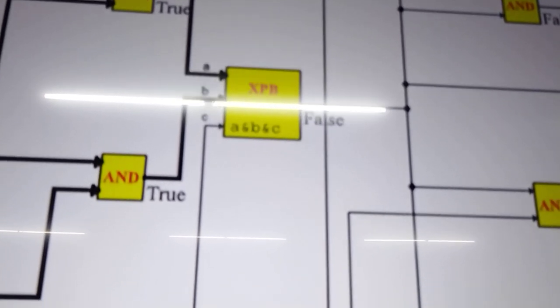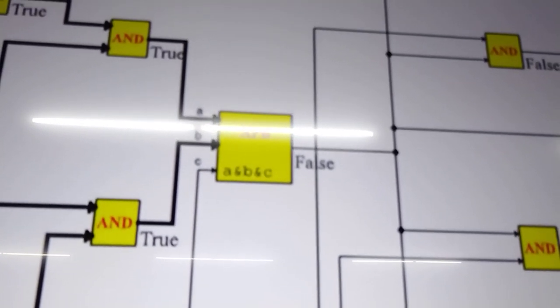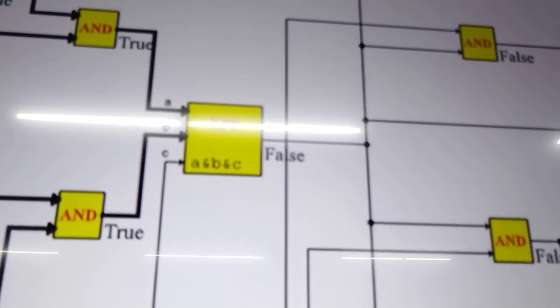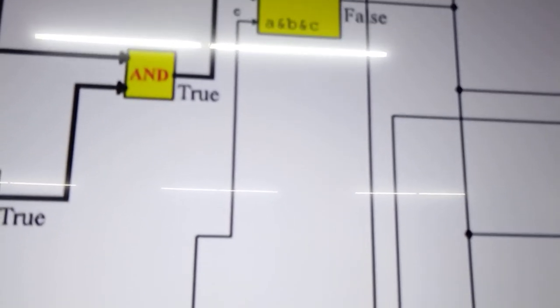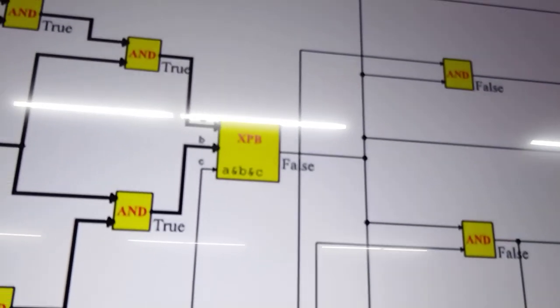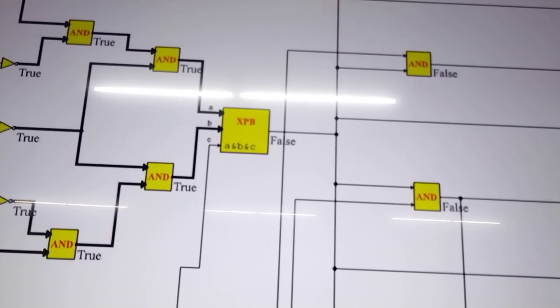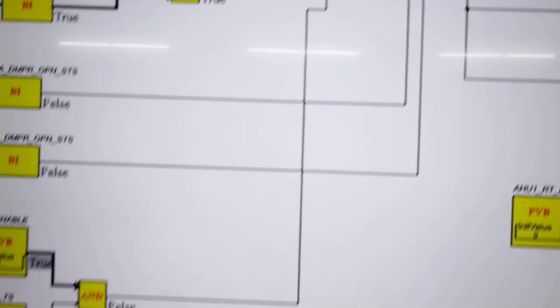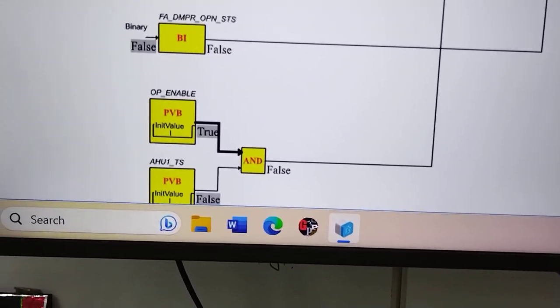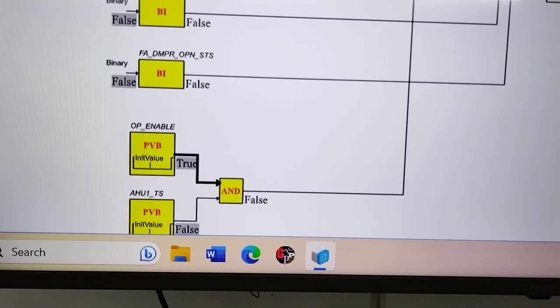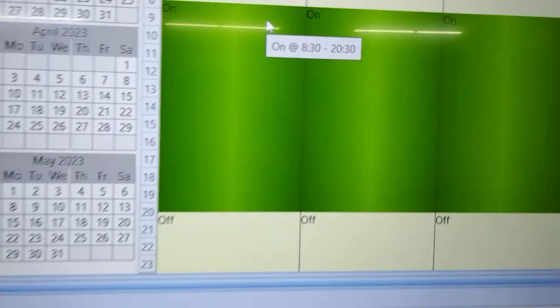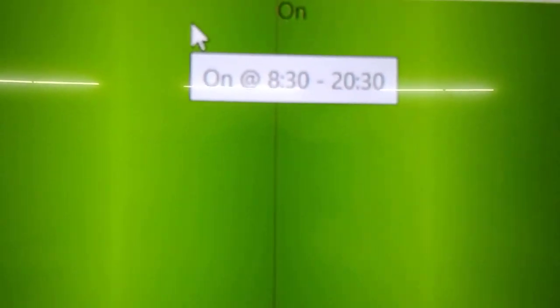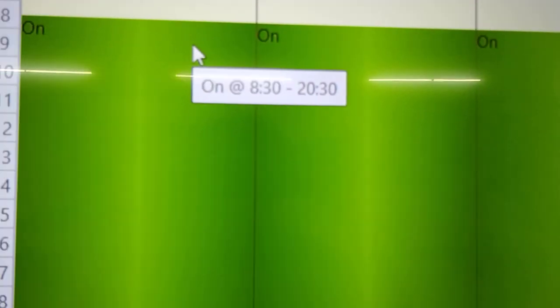This expression block output is binary — it's actually a combination of an AND gate. If A and B and C are all true, it will give an output of 1. But since we have one input which is false, the truth table of an AND gate requires all inputs to be 1 before it gives an output of 1. So we need to make this AHU time schedule true. Let me show you why it is false. What I have here is the time schedule.